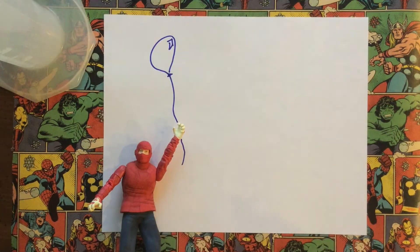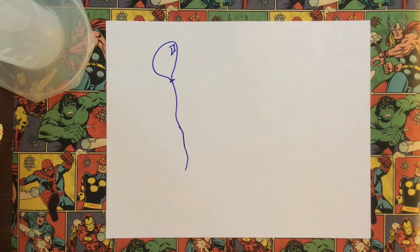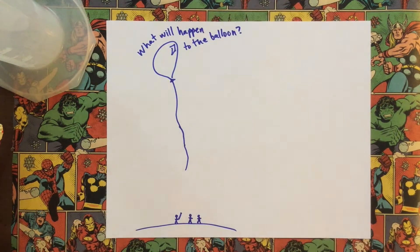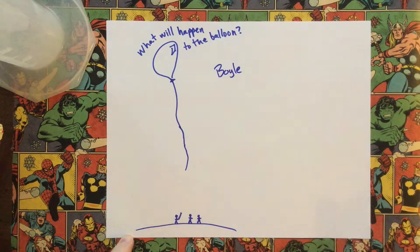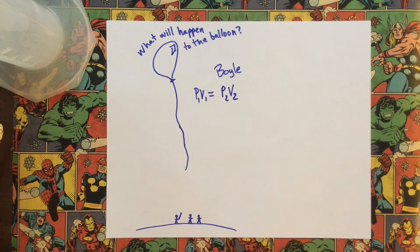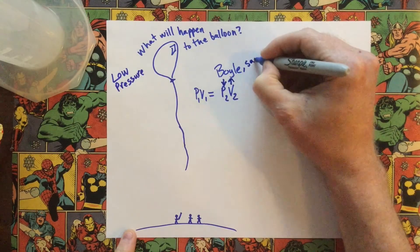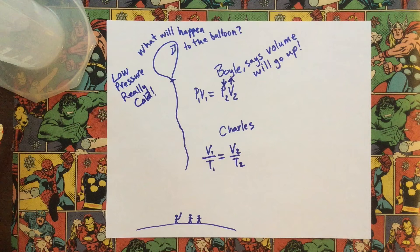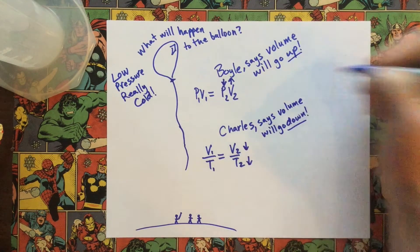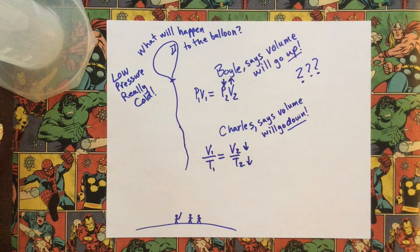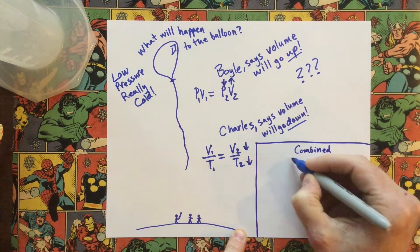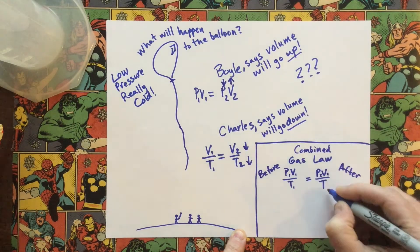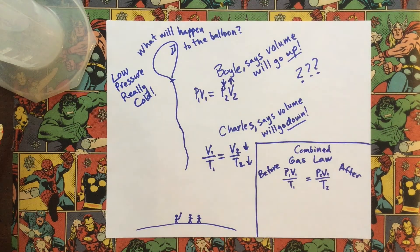Let's take Tobey Maguire's Spider-Man — he's at the park with his helium balloon and accidentally lets it go. The balloon rises and he turns to his friend Dr. Boyle, who sees this as an inverse relationship: less pressure up high means the volume should go up — the balloon's going to get huge. But then his other friend Dr. Charles says: when it gets way up high it's going to be really cold, so as temperature goes down, the volume should go down. So we've got a problem — Boyle says it's going to go up, Charles says it's going to go down. So we put these two formulas together: Boyle's and Charles's work together to make the combined gas law.